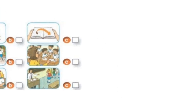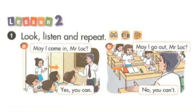Page 42. Lesson 2. Activity 1. Look, listen and repeat. A. May I come in, Mr. Locke? Yes, you can. B. May I go out, Mr. Locke? No, you can't.